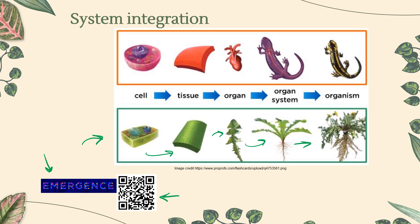The organism can do things and has properties that do not exist in individual organs. All of these emergent properties require some integration amongst all those different little pieces and parts. When we talked about system integration in animals, we talked about the nervous system and the endocrine system — those hormones. For plants, we're really going to focus just on hormones.